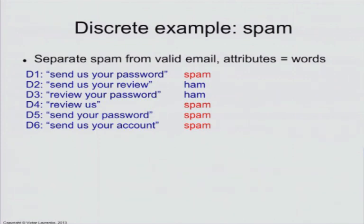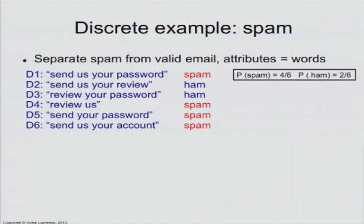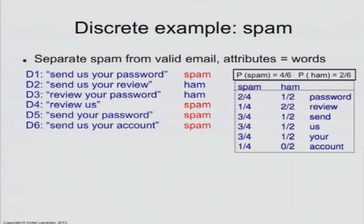So we estimate the Naive Bayes. The first thing you always do is the priors: two-thirds chance that it's spam, one-third chance that it's not spam.